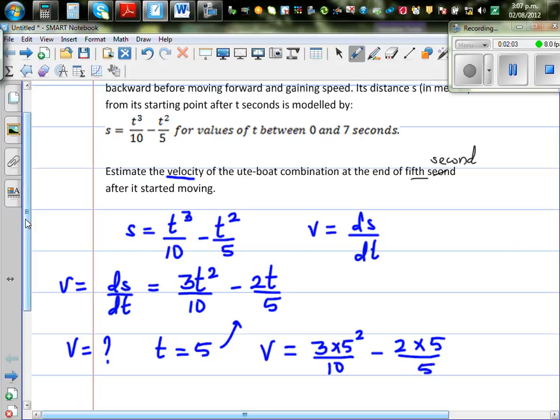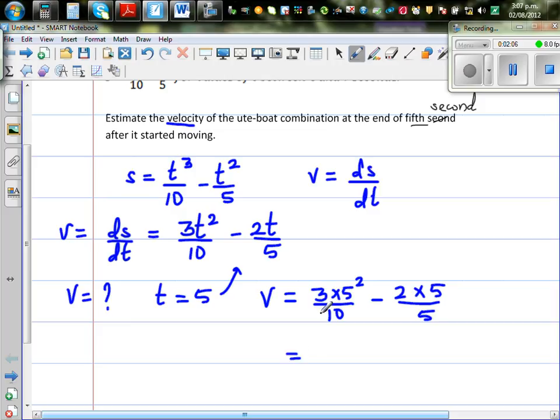So this is 3 times 25 over 10. This 5 and 5 gets cancelled minus 2.